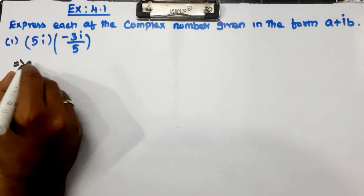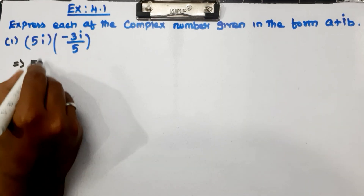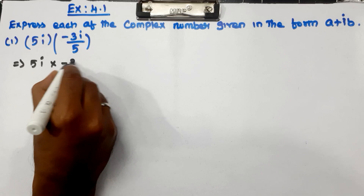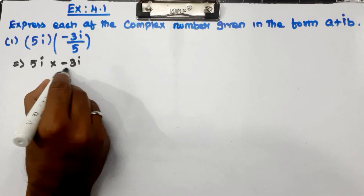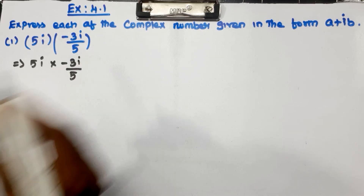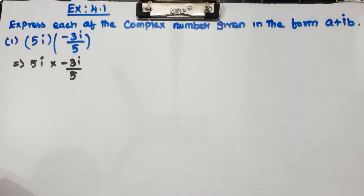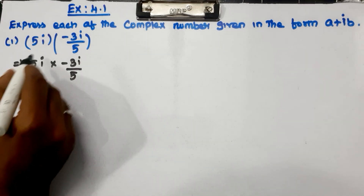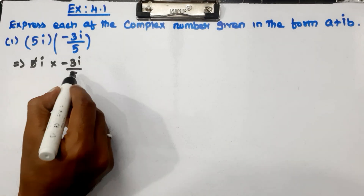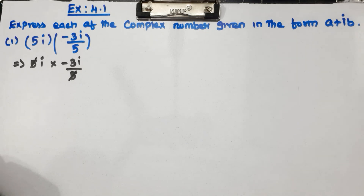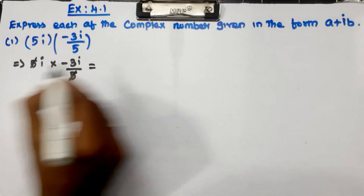Let's write 5i into i by 5. If you look at 5i and 5i, they cancel.